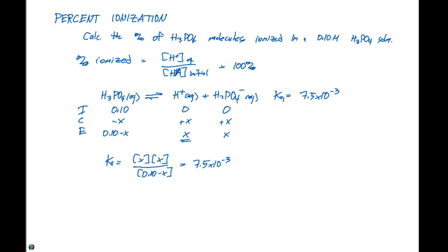Unfortunately, since this Ka is not sufficiently small, we can't use any approximations. So x squared equals 7.5 times 10 to the minus 3 times 0.10 minus x. If we rearrange this equation, we get x squared plus 7.5 times 10 to the minus 3 x minus 7.5 times 10 to the minus 4 equals 0.